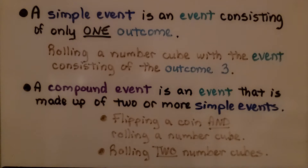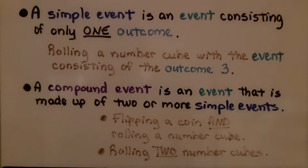A compound event is an event that is made up of two or more simple events — such as flipping a coin and rolling a number cube, rolling two number cubes, or even flipping two coins.